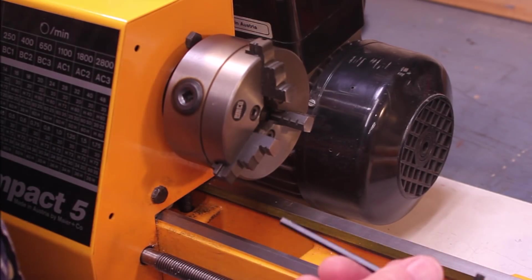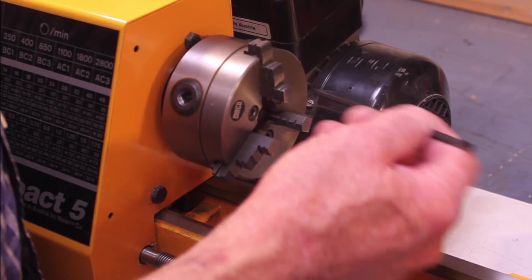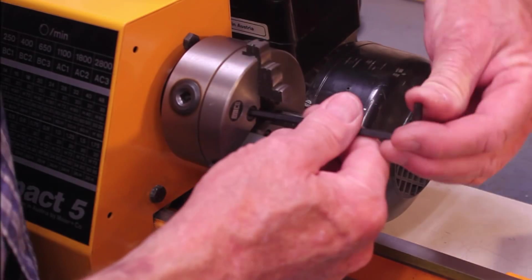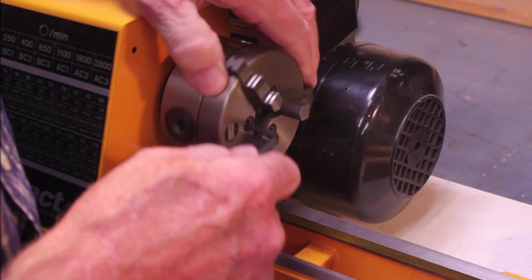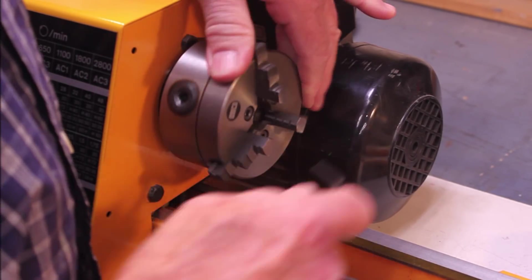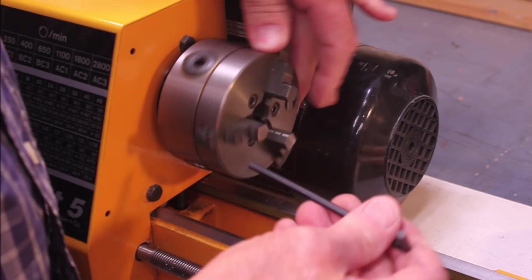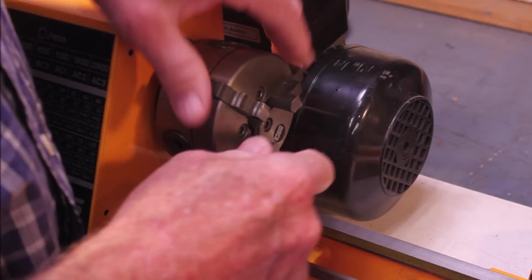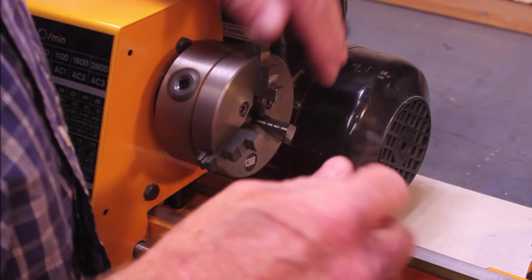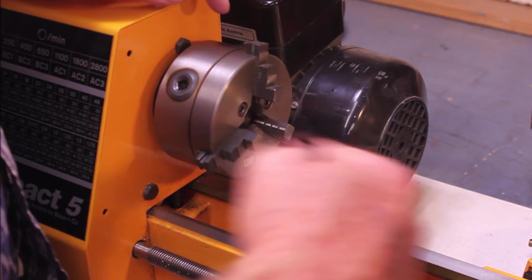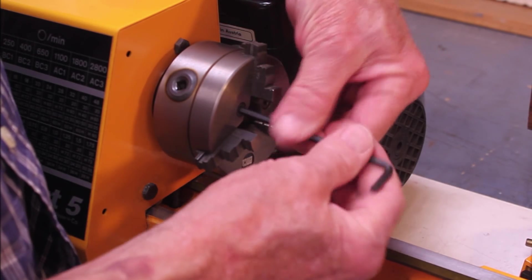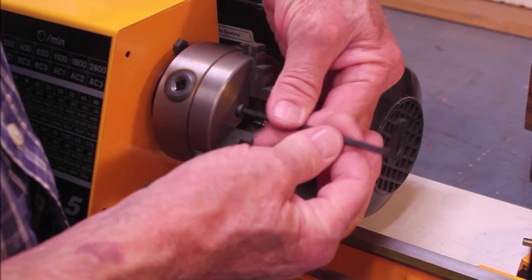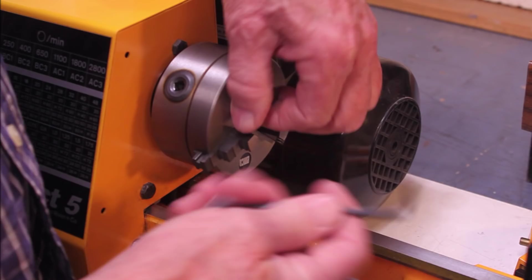One of the complications with this lathe is that in order to change this chuck, for example, I have to loosen three bolts here. And I'm going to have to use either three or four bolts to put a different chuck on there or a mounting plate. It's just a bit of a nice safety feature in the sense that you can't possibly unscrew one of these chucks. It just takes a few extra minutes to do it.